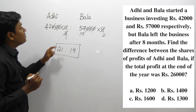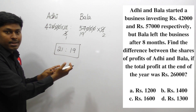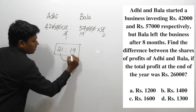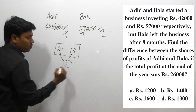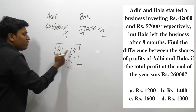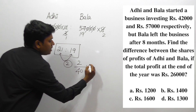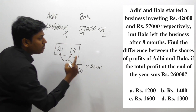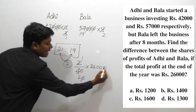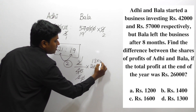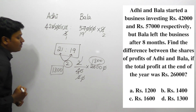We need to find the difference in the share of Adhi and Bala. Don't calculate each person's share separately — directly find the difference in the ratio. So 21 minus 19 equals 2. Then 2 divided by total ratio (21 plus 19 equals 40) multiplied by profit 26,000. Cancelling zeros and simplifying: 2 divided by 40 into 26,000 gives 1,300. The difference in their shares is 1,300.